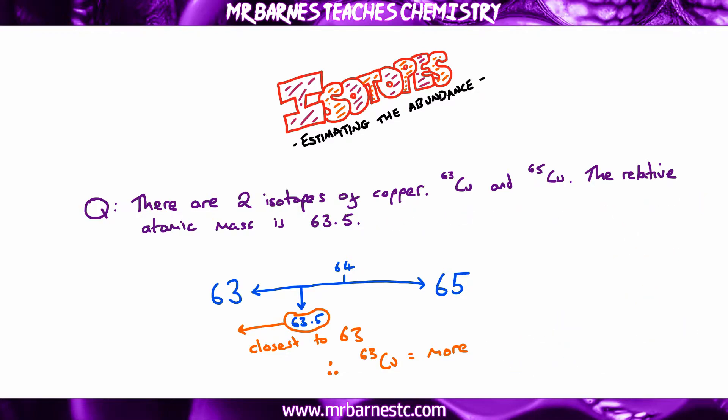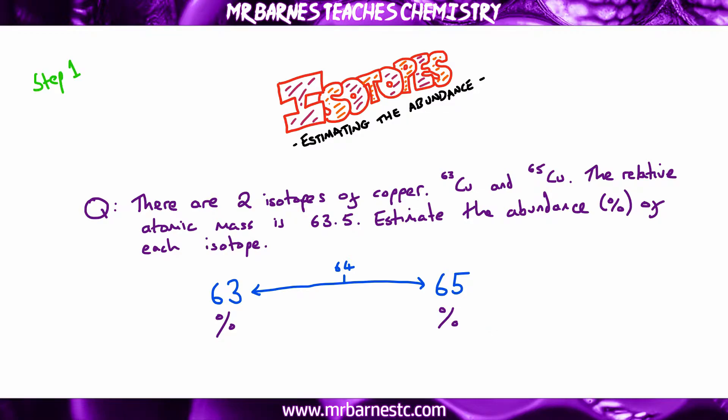The more complicated question is where the examiner will turn around and say this. So we've got the same information, however, it says estimate the abundance of the isotopes. So what is the percentage of copper 63 and what is the percentage of copper 65? Now the easiest way I find to do this is to start off by working out the difference between the masses of the two isotopes. So 65 take away 63 is 2. So that is the difference between my two isotopes.